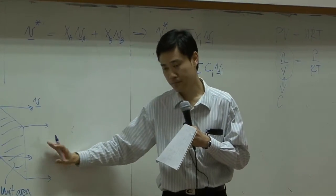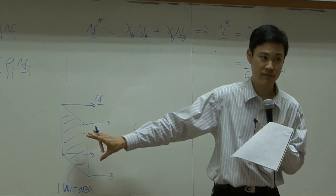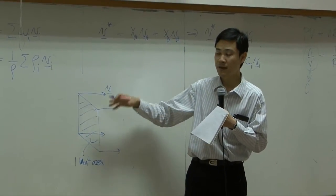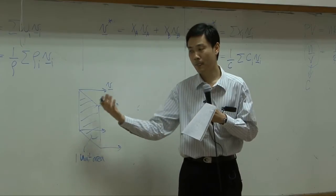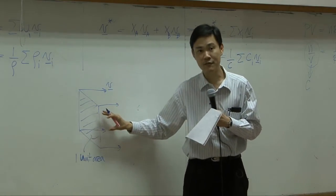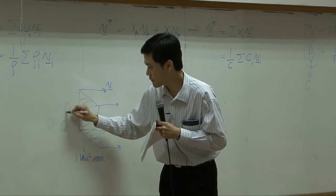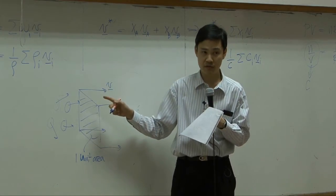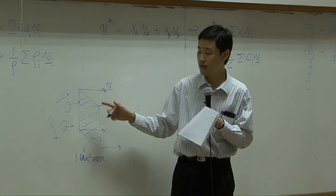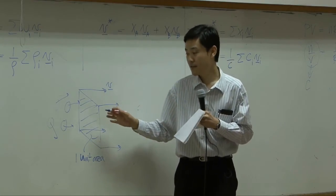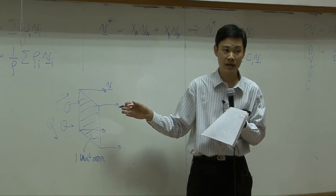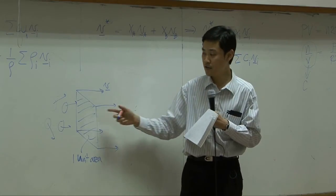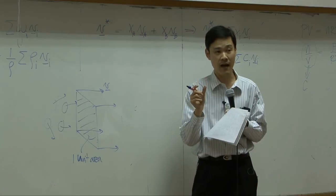Now, let's turn our attention to this picture. Suppose I have a screen with a unit area — one unit area here — and this screen is placed in a fluid. There will be flow of molecules passing through this screen. You have molecules passing through. Of course, a molecule itself can move in any direction in three dimensions. But if you consider the direction that is perpendicular to this screen, you monitor how many molecules pass through this screen.